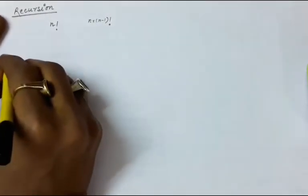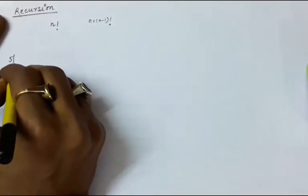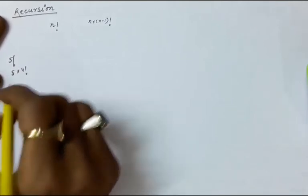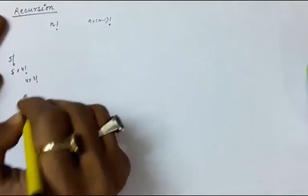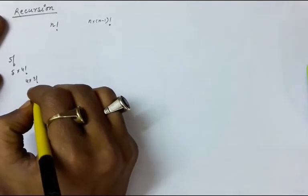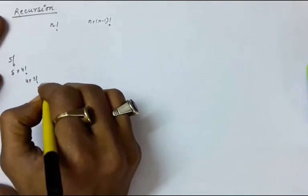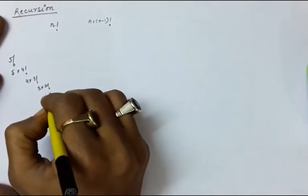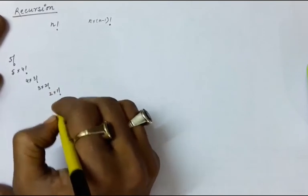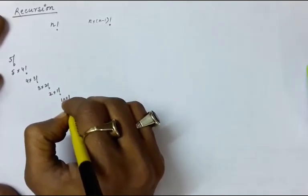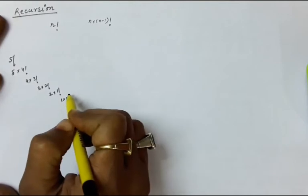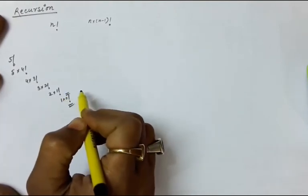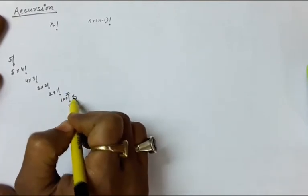If you are trying to find out factorial of 5, it is 5 into factorial 4. Factorial 4 is 4 into factorial 3, factorial 3 is 3 into factorial 2, factorial 2 is 2 into factorial 1, factorial 1 is 1 into factorial 0. But you cannot reduce it further from 0, so this is the base condition: factorial 0 is 1.